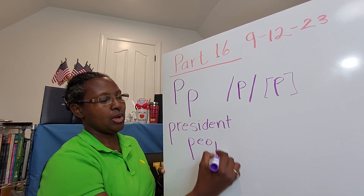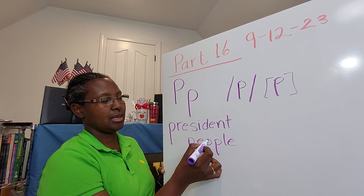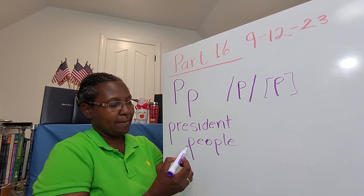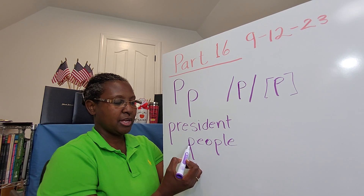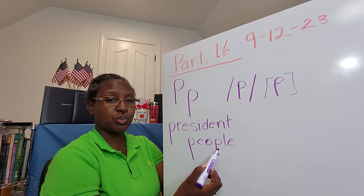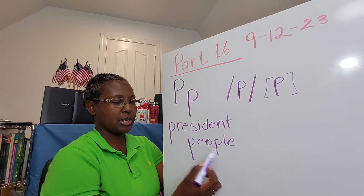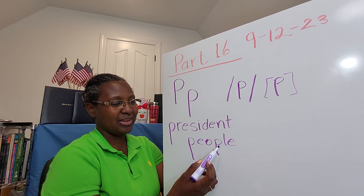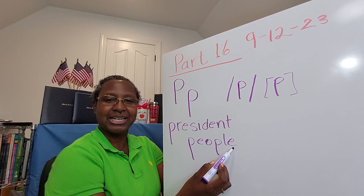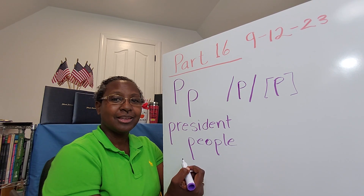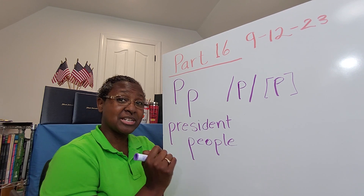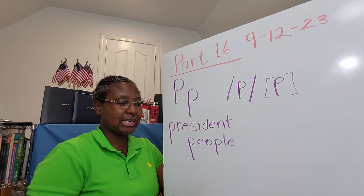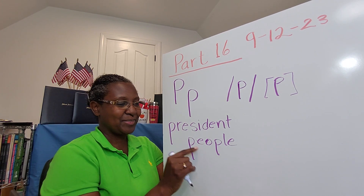How about another example? P-E-O-P-L-E. People. People. There are two of the letter P in this word. It has a funny spelling, doesn't it? P-E-O. Why doesn't it say P-L-E at the end, right? Weird word, weird spelling, but the pronunciation is P-P-L. So now you know when you get to your test to say 'peepl' and not 'pee-oh-pull.' Peepl.